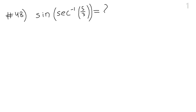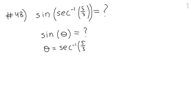One way to do this — not the most economical — is to use a calculator. The calculator gives an ugly number corresponding to an angle, then you take sine of that angle and get another ugly number, which may or may not be marked correct. A better approach, completely without a calculator: the final answer should be a ratio, since the outermost function is sine. We define theta as the angle such that the inverse secant gives 5 thirds, meaning secant of theta equals 5 thirds.